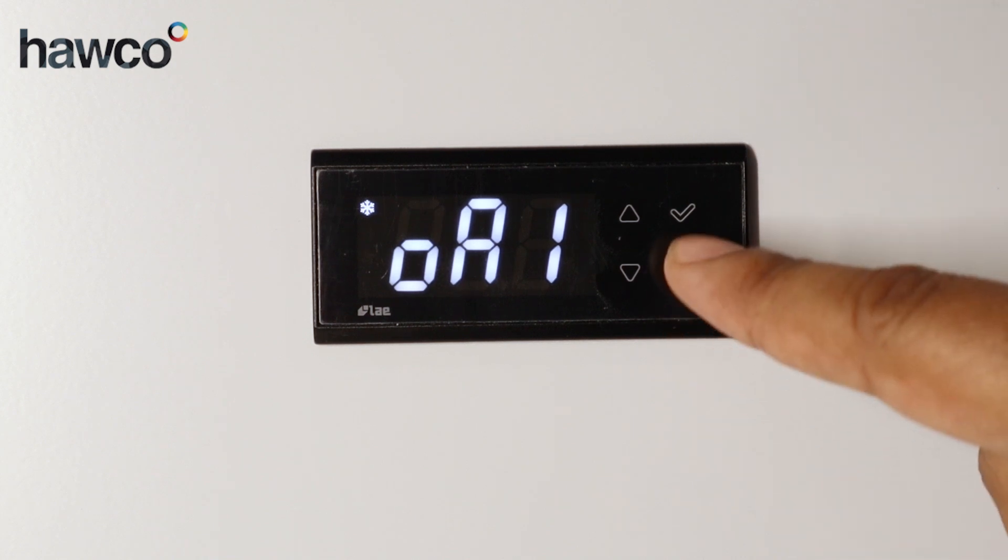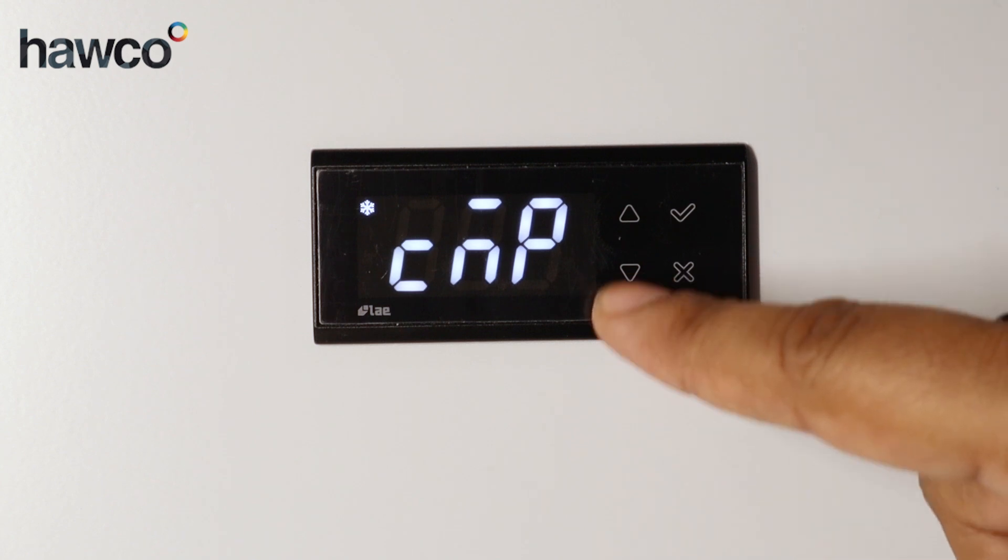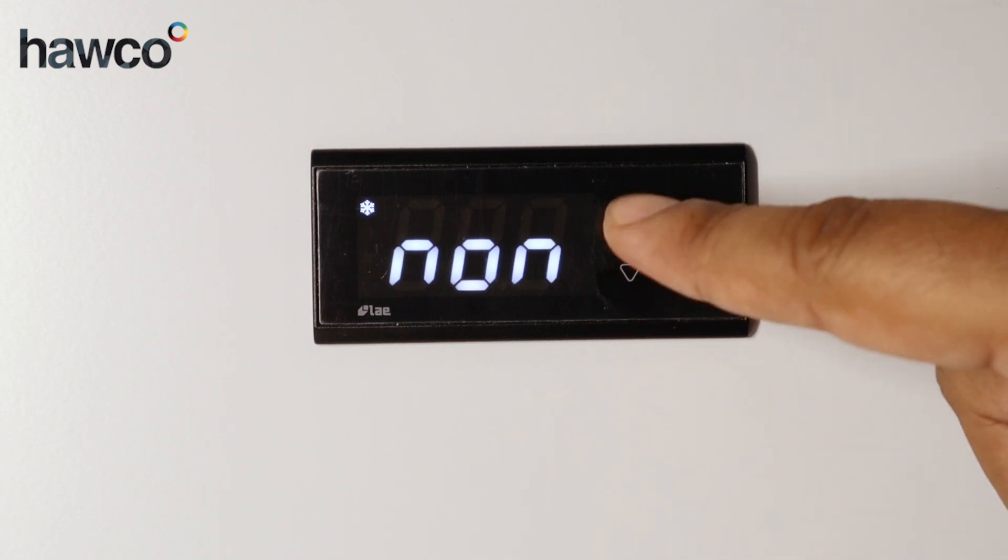Now the first one is OA1. With every single relay we have to make sure we give it a function. The choices that we have are non-functioning, compressor,